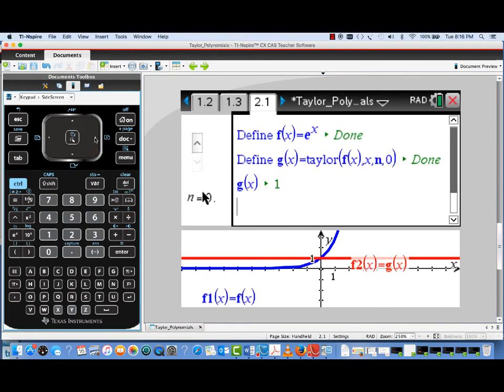All right, well, let's go to another page where we actually have an opportunity to look both symbolically and graphically at Taylor polynomials. I've defined F of X is equal to e to the X. G of X is its Taylor polynomial expanded at X equals zero with the degree controlled by this slider over here.